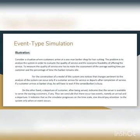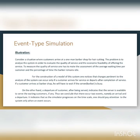For the construction of a model of this system, one notices that changes pertinent to the analysis of the system can occur only if a customer arrives for service or departs after completion of service. If a customer arrives at the barbershop, he will have to wait if the barber is busy. A departure of a customer after being served indicates that the server is available to serve the waiting customers, if any. Thus we conclude that there occur two events, namely an arrival and a departure.